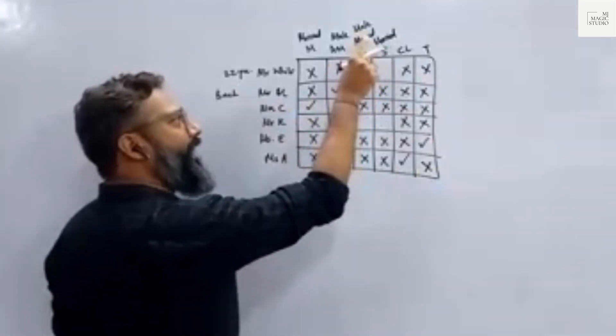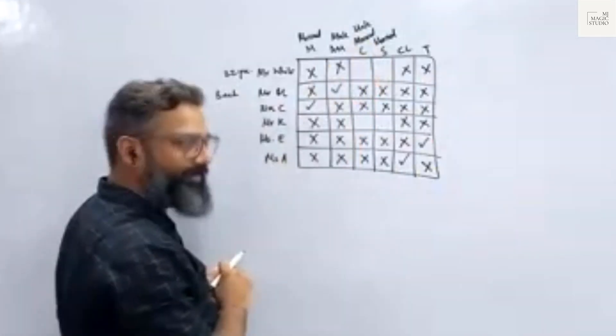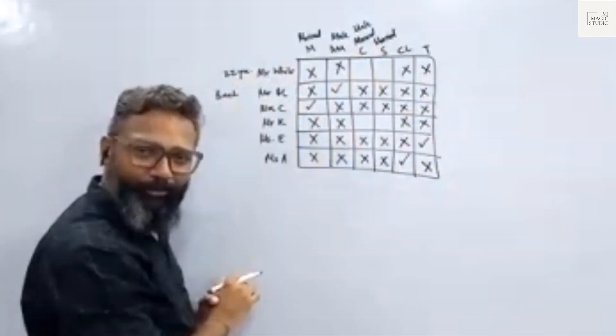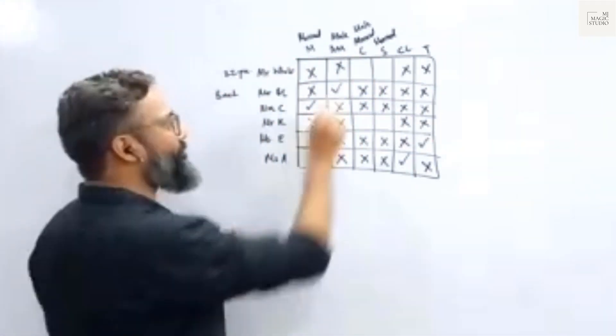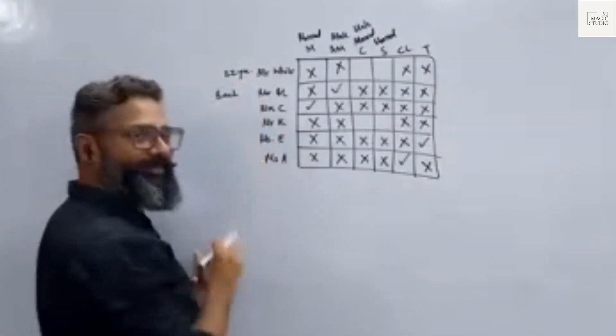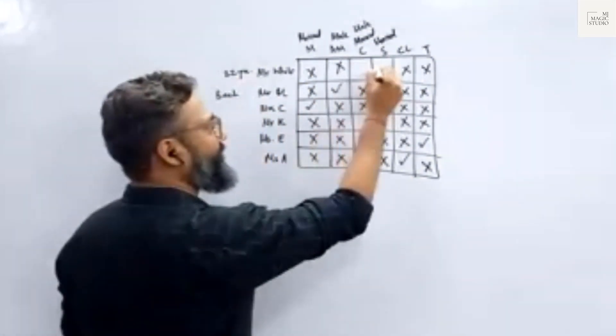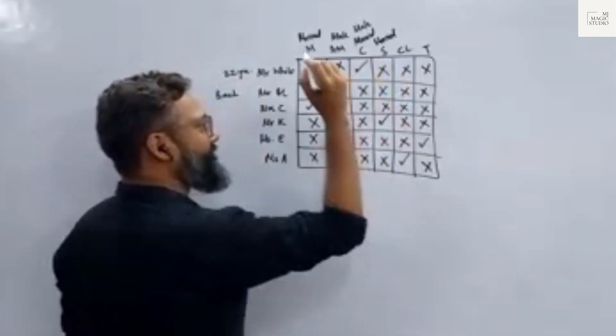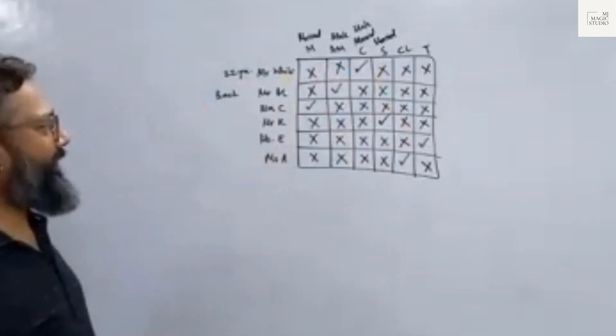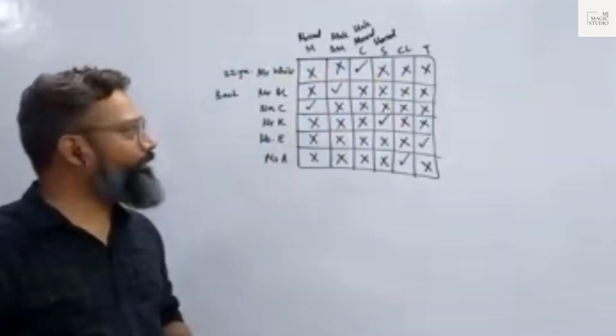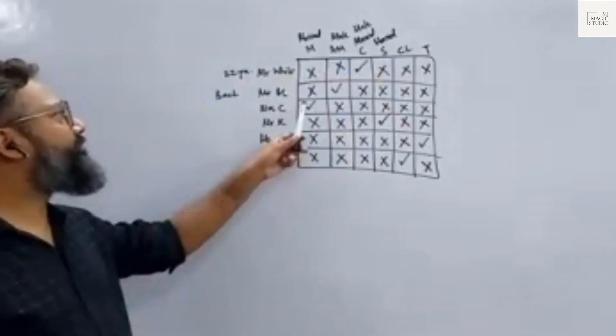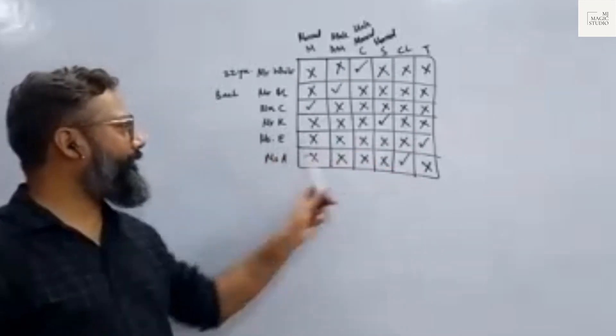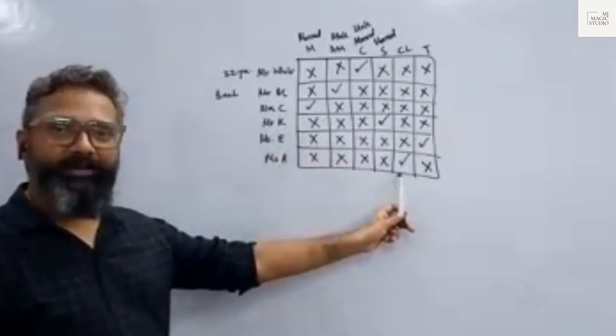Stenographer is father-in-law of someone. Stenographer cannot be of 22 years old. So from stenographer, I am crossing out Mr. White. Cashier is Mr. White. Stenographer is Kelly. Mr. White is the cashier. Mr. Black is assistant manager. Mrs. Coffee is manager. Kelly is stenographer. Earnshaw is teller. And Ankita is the clerk.